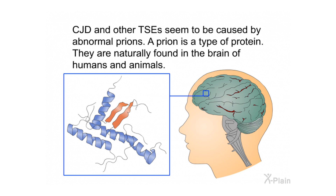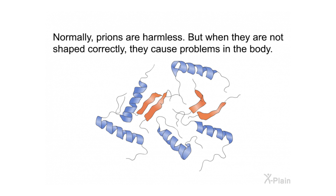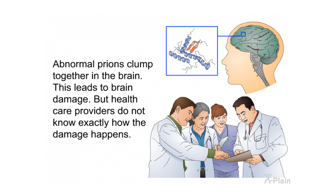CJD and other TSEs seem to be caused by abnormal prions. A prion is a type of protein naturally found in the brain of humans and animals. Normally prions are harmless, but when they are not shaped correctly they cause problems in the body. Abnormal prions clump together in the brain, leading to brain damage, though healthcare providers do not know exactly how the damage happens.